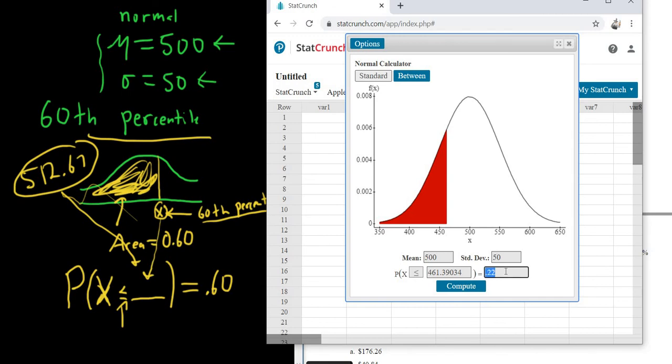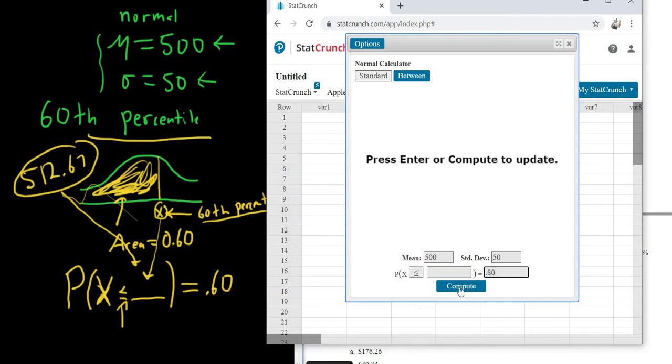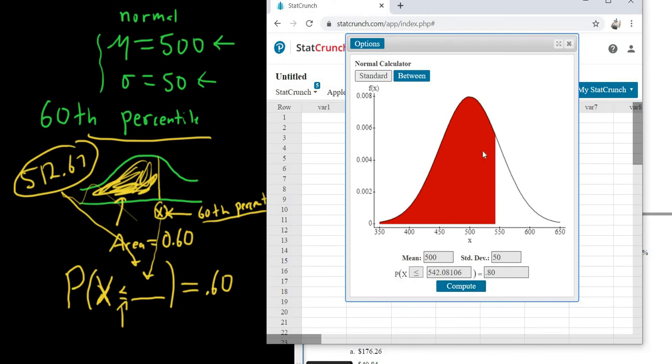If it was 80th percentile, you plug in 0.8. And then again, just always pick less than. Boom. And you see it makes sense. 80% is to the left. So whatever percentile you have, you just plug it in here and always pick less than. I hope this video has been helpful. Good luck.